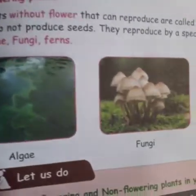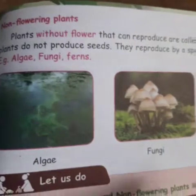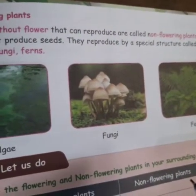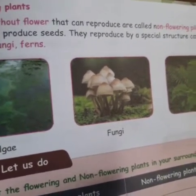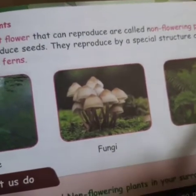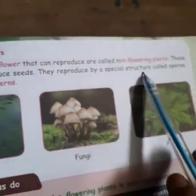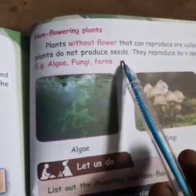Non-flowering plants: Plants without flowers that can reproduce are called non-flowering plants. Malarikal inri inaparikkam chayi thavarangal. These plants do not produce seeds. They reproduce by a special structure called spores — spore-kali mūanam inna perikkam chayi inna.